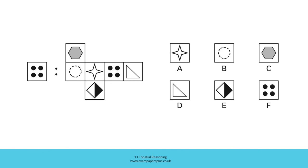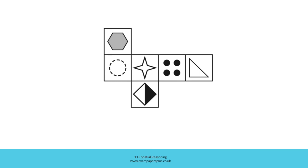In order to answer this question accurately, let's take a closer look at this net and visualise folding it to create the cube. It's useful to pick one of the faces and think about which faces would be directly next to it. Remember, we know that this is the target face, so we're going to work out which face would be directly opposite if we created the cube. Think about using those edges as fold lines and think about which edges would meet one another.